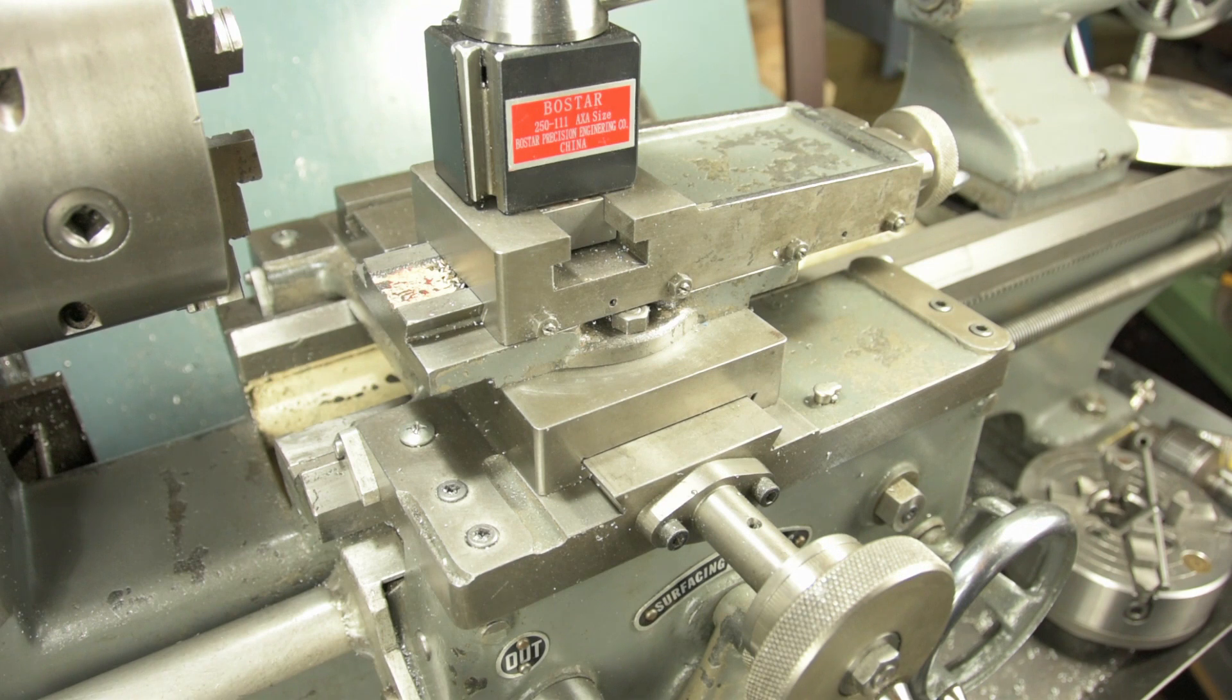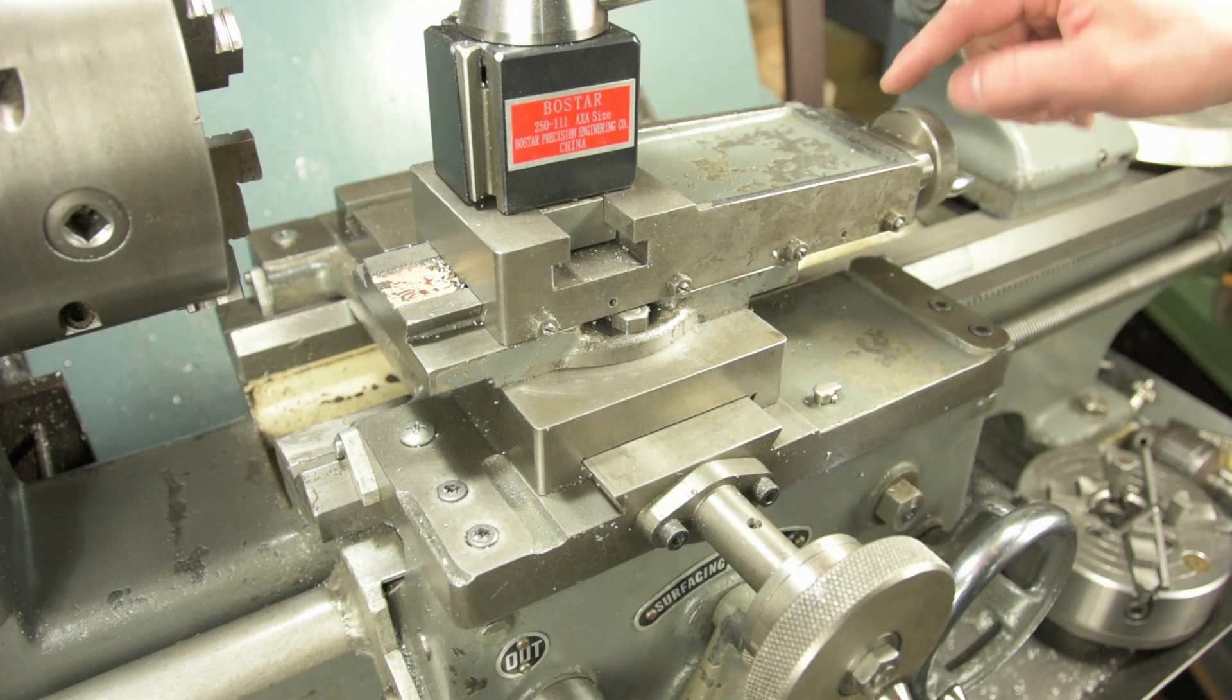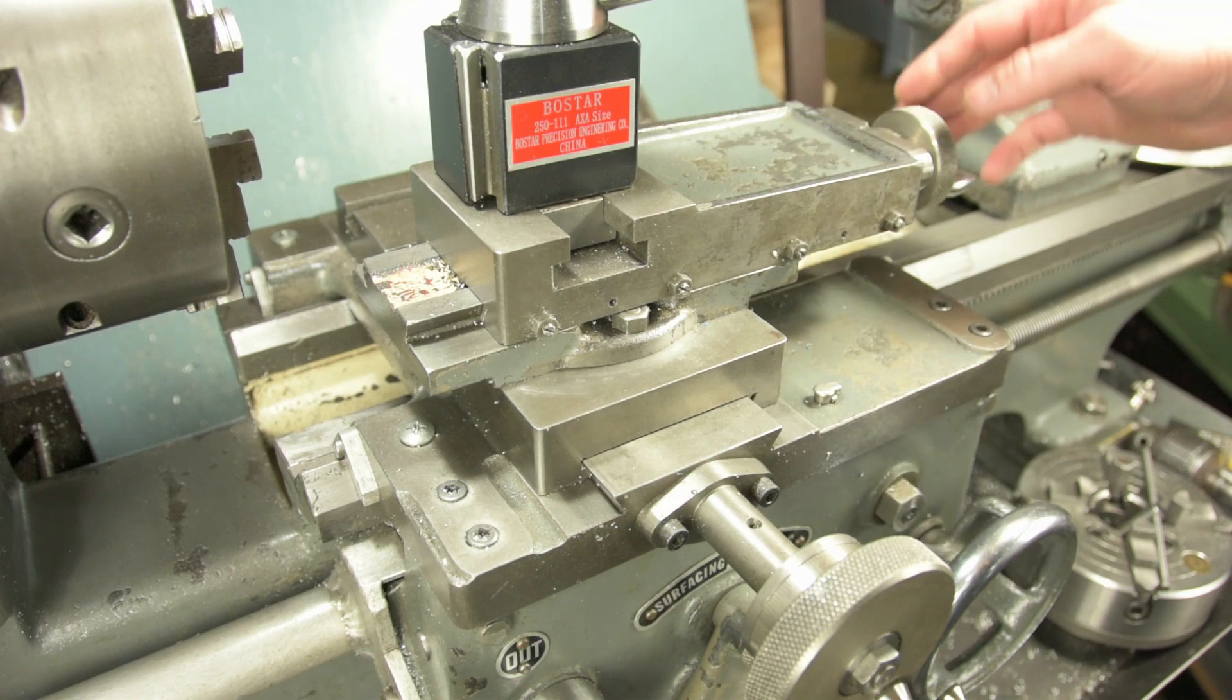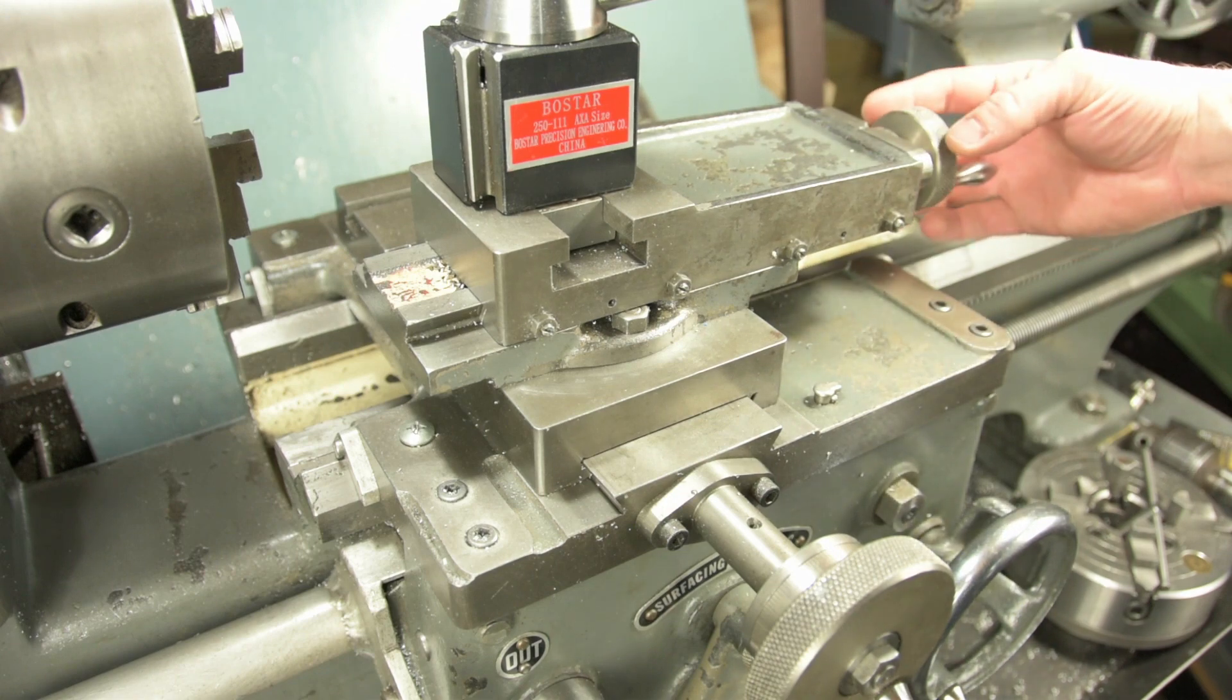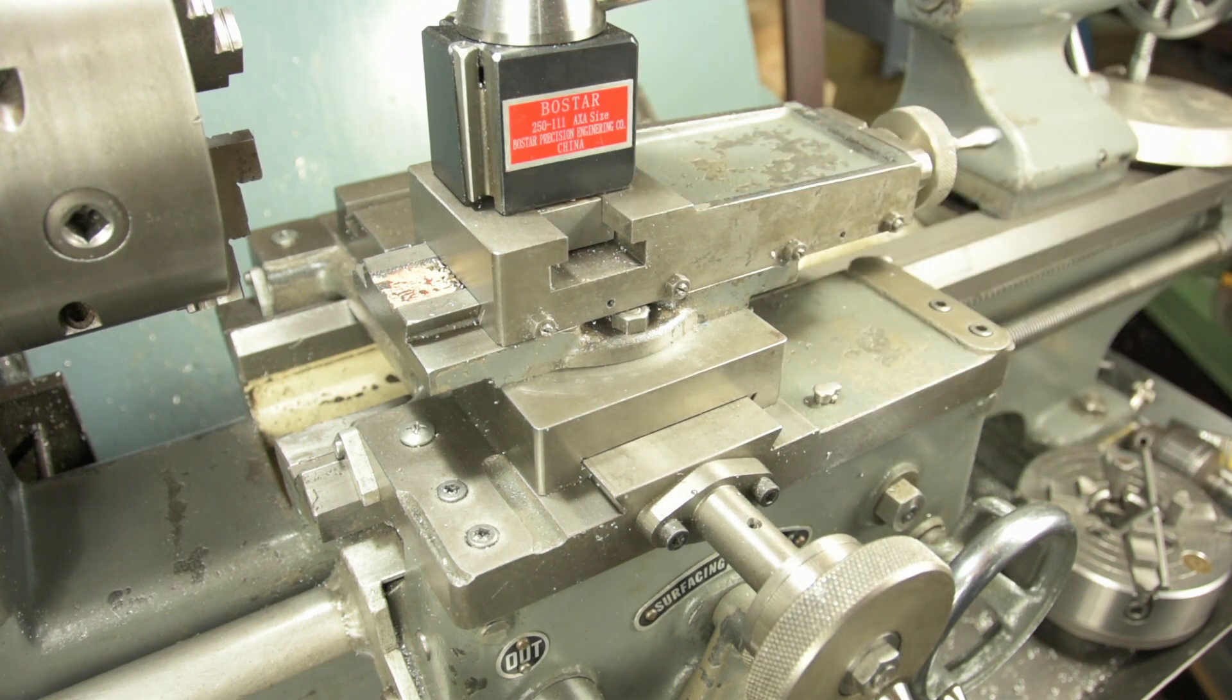Now this is not a new trick. This used to be used a long time ago for people that wanted to convert thousandths of an inch to ten thousandths of an inch. They'd set this to a little bit under six degrees, and for every thou that they fed on the compound, it would move in one ten thousandth in that direction.